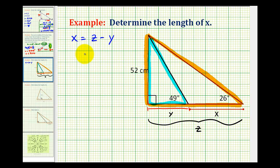And now we'll set up and solve a trig equation to determine the length of z and the length of y. If we take a look at this small blue right triangle, we know the length of the opposite side, and we need to solve for y, which is the adjacent side. And that's going to involve the tangent function. Tangent forty-nine degrees would be equal to the ratio of fifty-two to y.